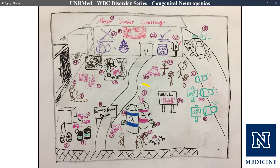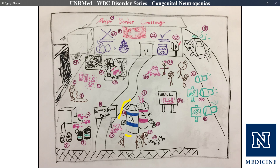Next is chronic granulomatous disease, represented by a sign for the Crossing Guard Depot — CGD. Chronic granulomatous disease occurs due to mutations in NADPH oxidase, represented by big oxide tanks. NADPH oxidase is important for producing the respiratory burst — a complex of enzymes that produces reactive oxygen species to directly destroy pathogens. Without functional NADPH oxidase, neutrophils can't be bactericidal.